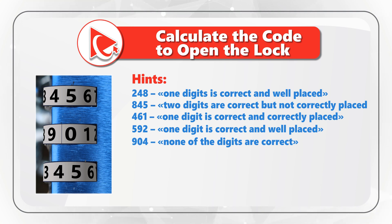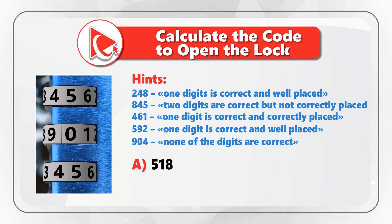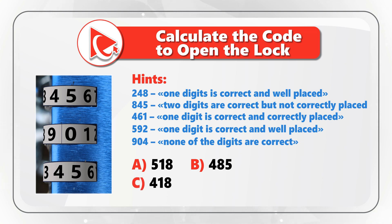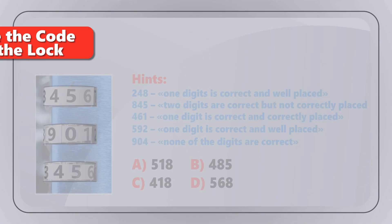To open the lock, you need to process all the hints and select one out of four possible choices: Choice A — 518, Choice B — 485, Choice C — 418, and Choice D — 568. Take a close look to see if you can come up with the answer.